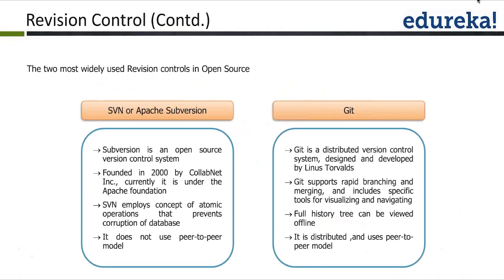Git, on the other hand, is a distributed version control system designed and developed by Linus Torvalds. Git supports rapid branching and merging and includes specific tools for visualizing and navigating history — which is what you see in GitHub through your web browser. You have a full history tree that can be viewed offline because Git is installed locally. It is distributed and uses a peer-to-peer model, allowing teams in different locations to work on the same codebase.